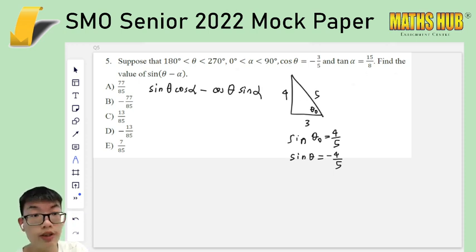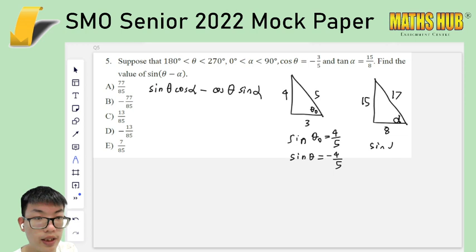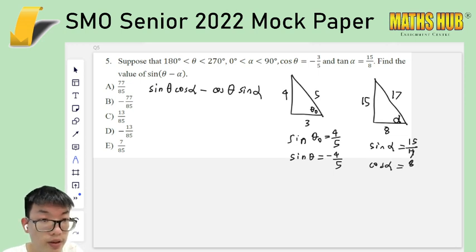We can also do the same with the alpha for tangent. This is in the first quadrant, so I can actually draw it out in a normal way. And know that that's the actual angle alpha. 15, 8, and 17. So sine is 15 over 17. And cosine is 8 over 17.